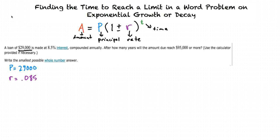Now in this problem, we are given our answer or our goal, so we need to solve for the variable T. We will write our equation as 29,000 times the quantity of 1 plus 0.085 to the T is greater than or equal to 95,000, because we are trying to find how many years T it will take for the final amount to be equal to or greater than 95,000. Our answer that we get for T will be the smallest possible whole number answer.